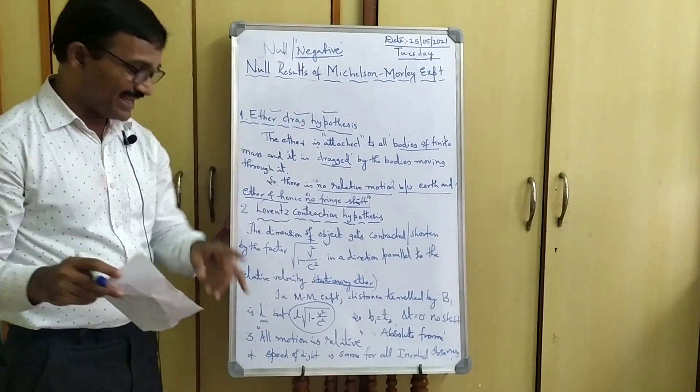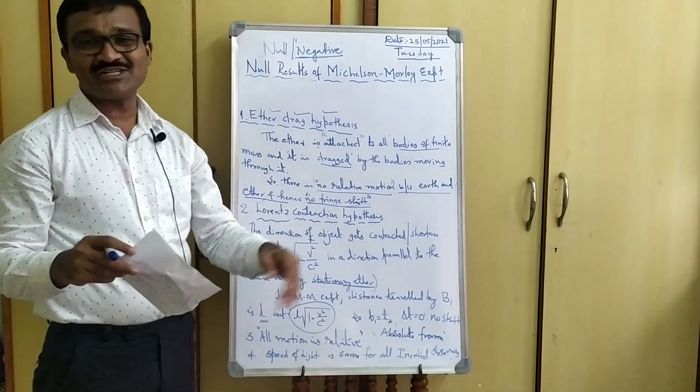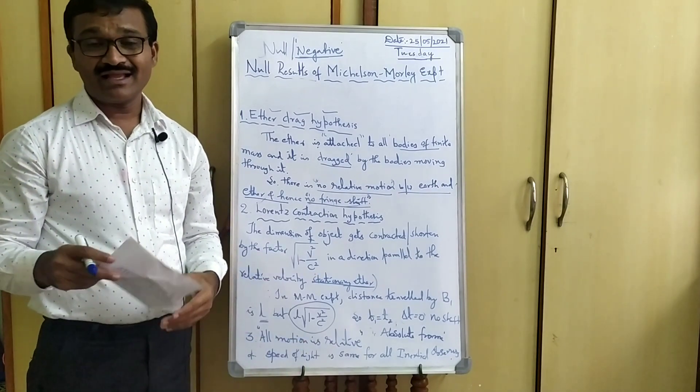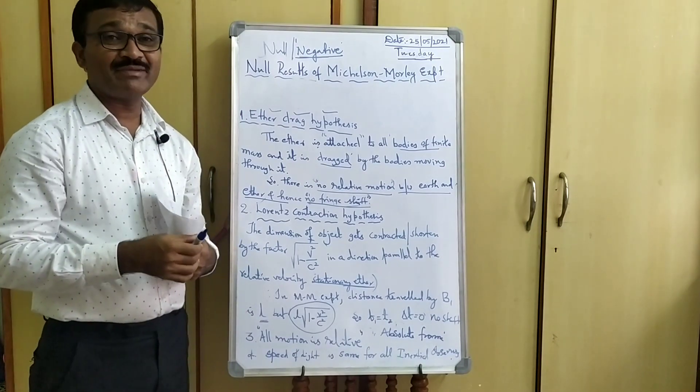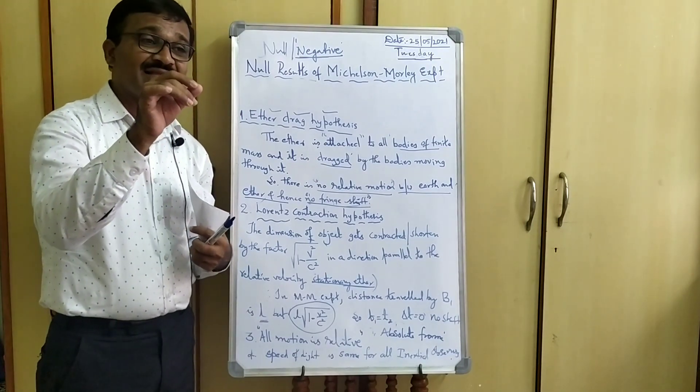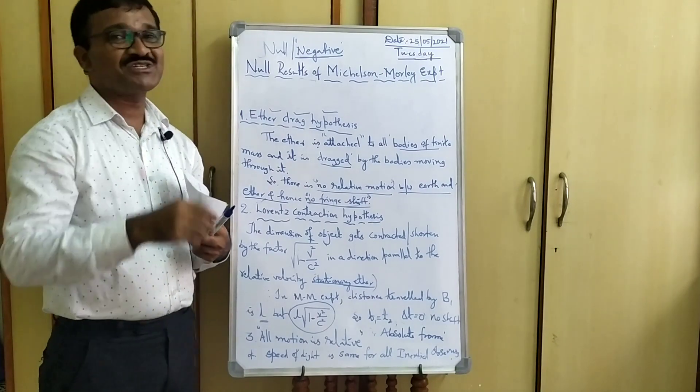Hence, finally, all motion is relative. Another thing here, the velocity of light is invariant. That means, the speed of light is same for all inertial observers.